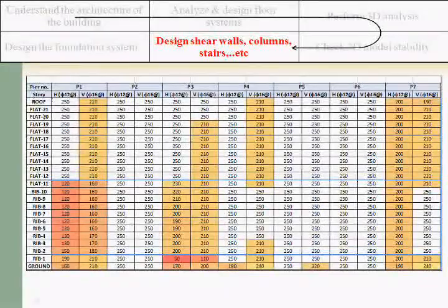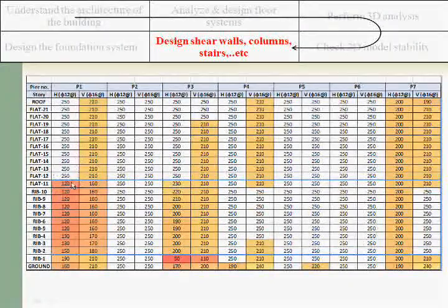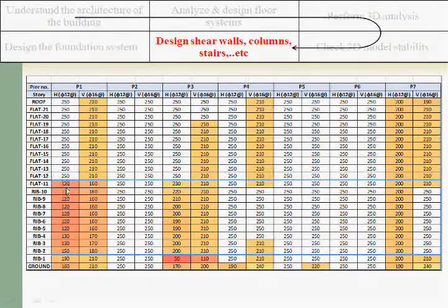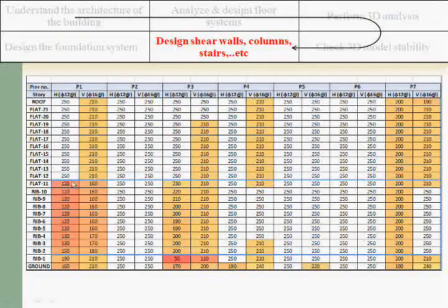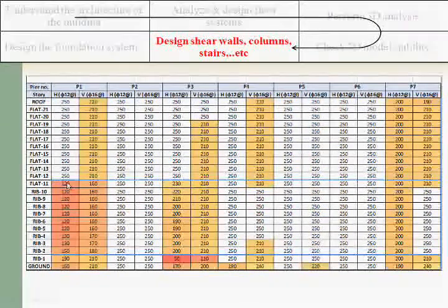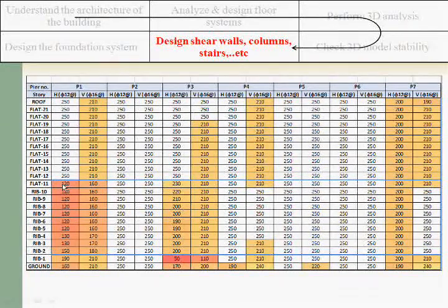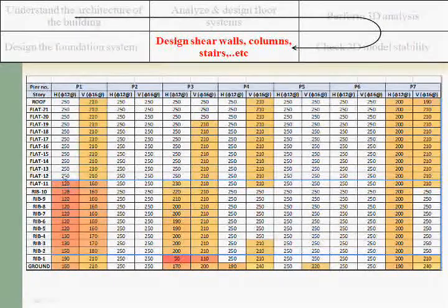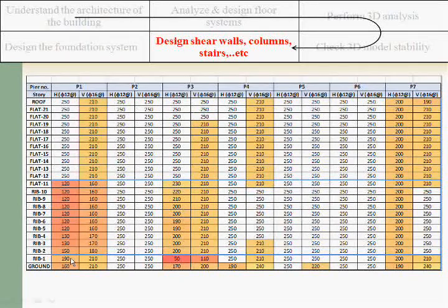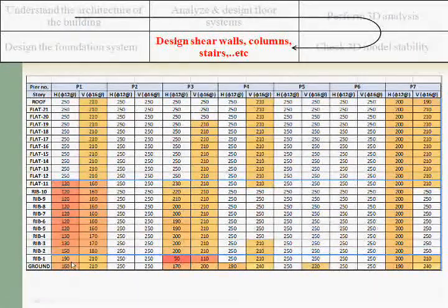This is the result for each pier, as you can see, for each floor. This number, for example 120, is coming from the 6 or 8 load combinations that we have used in this floor. As you can see, floor 11 has a reinforcement more than the first or second floor. This is because it's dependent on the torsion, shear, and not only the axial and the moment.